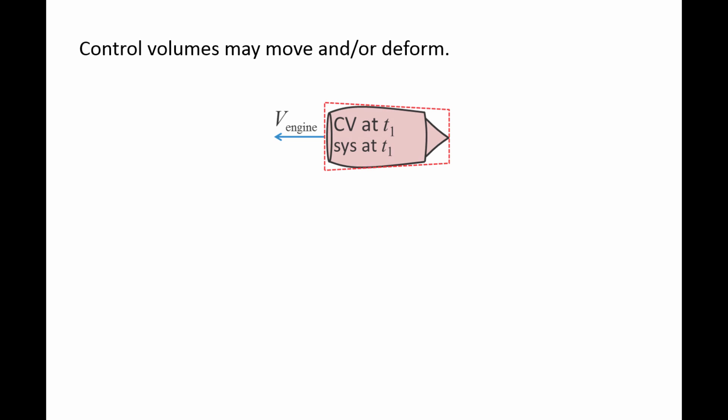For example, a jet engine is filled with air, fuel, and exhaust gases at time t1. The control volume is the region of space occupied by the jet engine and outlined by the red dashed lines. The system is the pink shaded area. At time t1, the control volume and system occupy the same region of space.